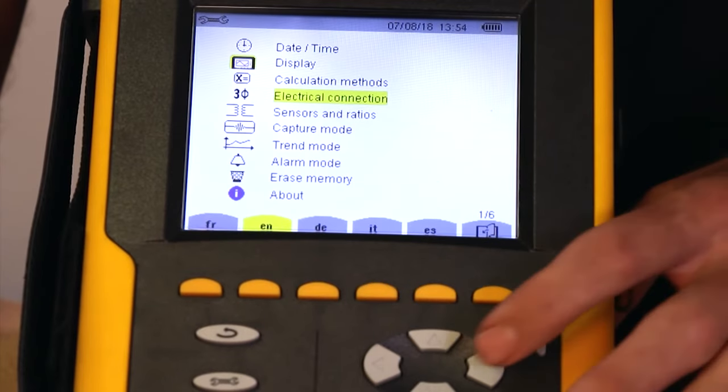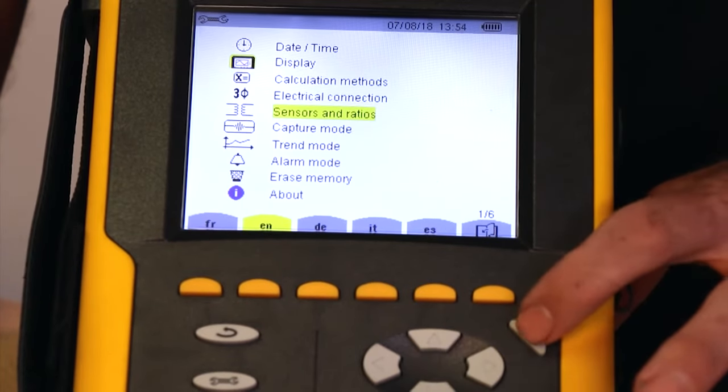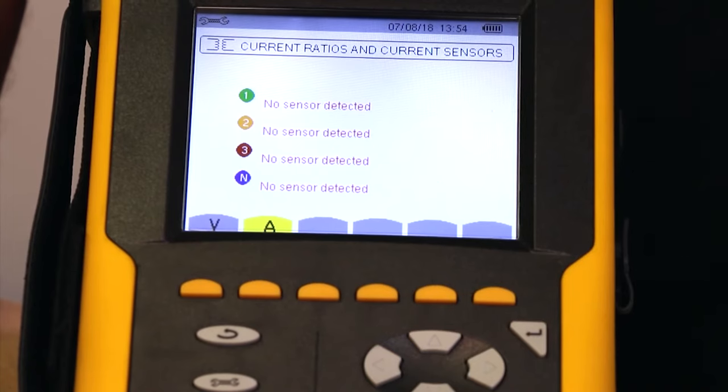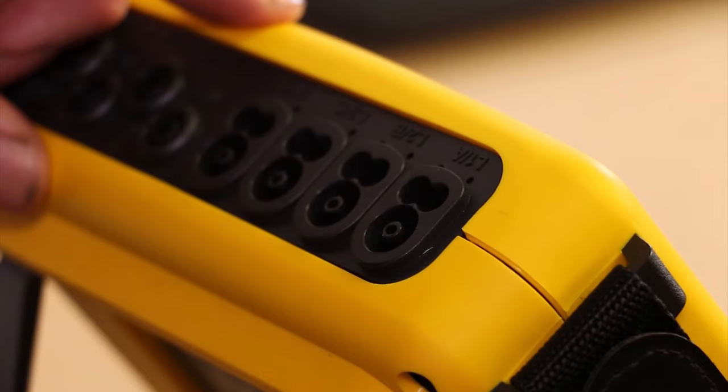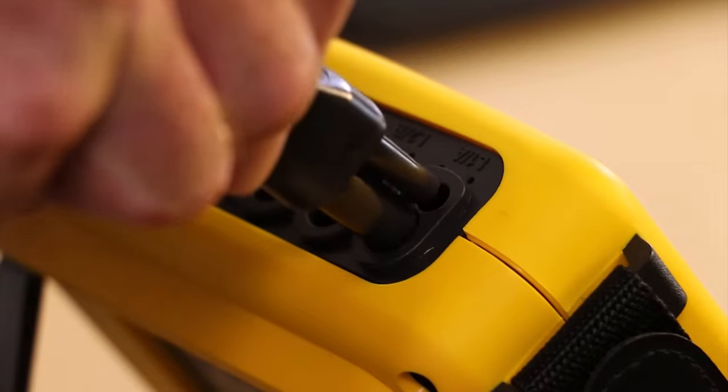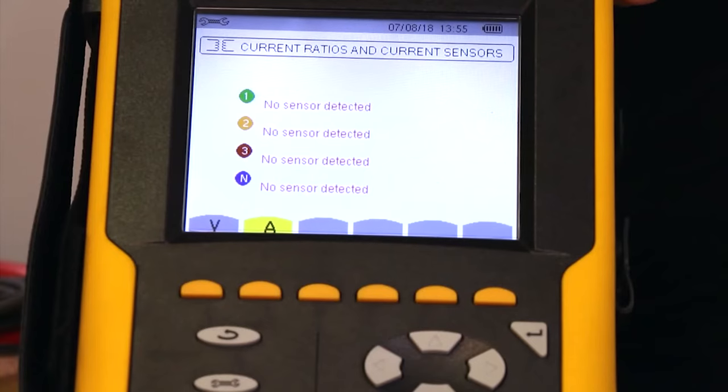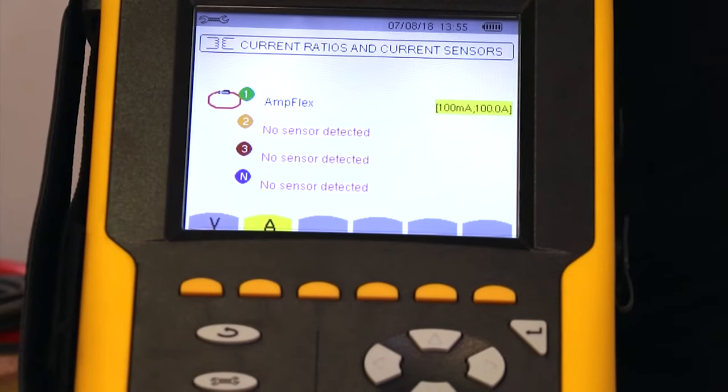Next go to sensors and ratios and press enter. At the moment, no sensors are plugged into the product. As soon as I plug one in, you'll see the Qualistar has detected an AmpFlex Rogowski coil has been connected.